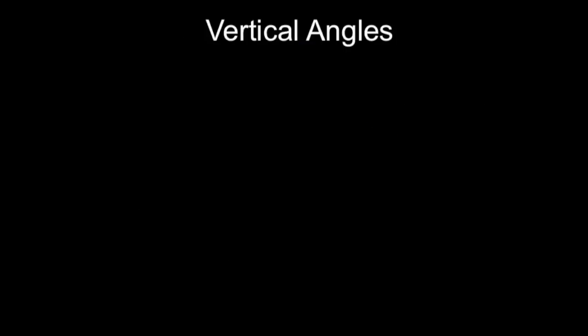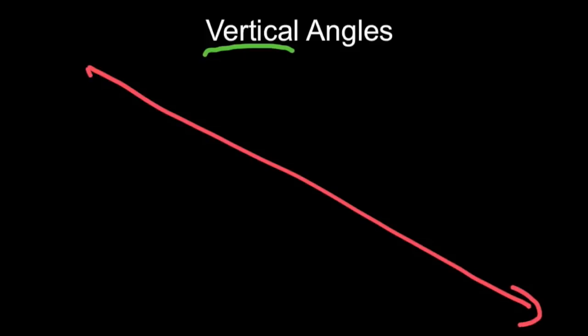Vertical angles. Now this one's a little weird—the word vertical doesn't really help you quite as much, but it's a very useful thing to know. Vertical angles happen when you have two lines that intersect.